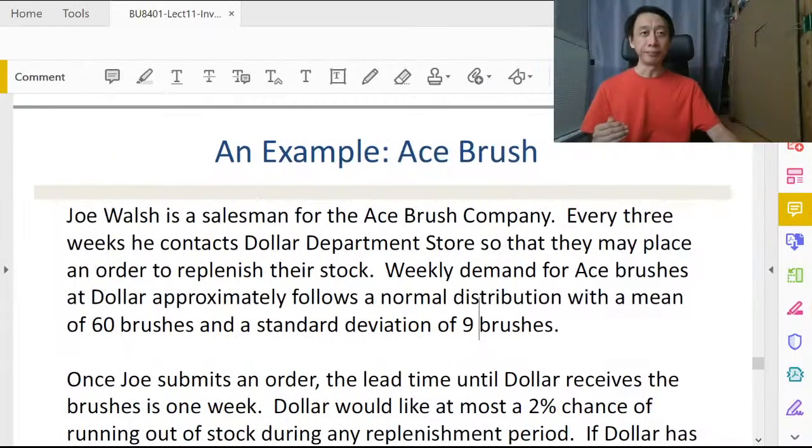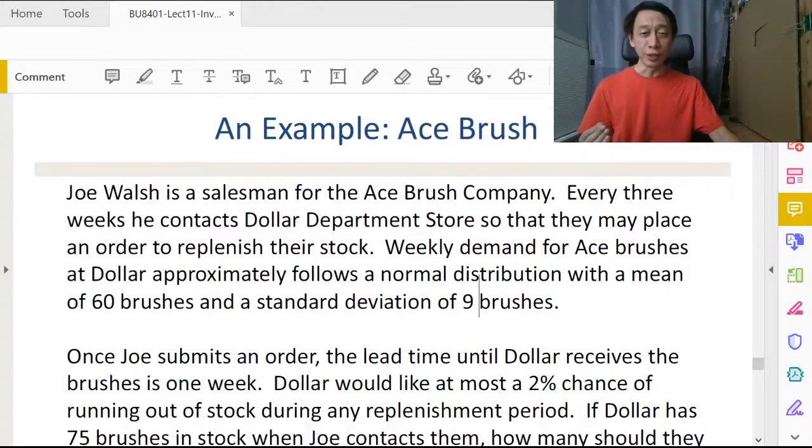In this segment we're going to look at an example that involves inventory management with periodic review and dynamic demand. This is the Ace Brush example where Joe Walsh works. Joe is a salesman for the company, so presumably he's selling ace brush toothbrushes or something.